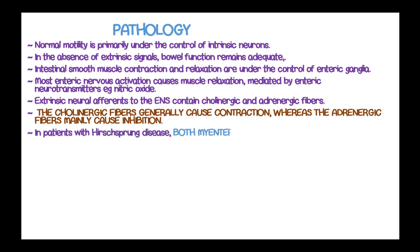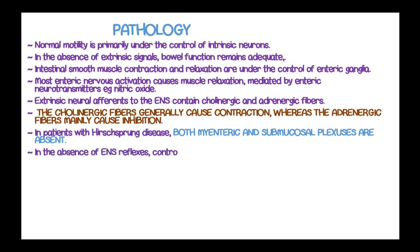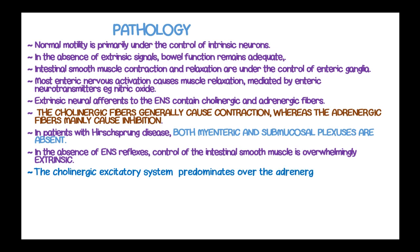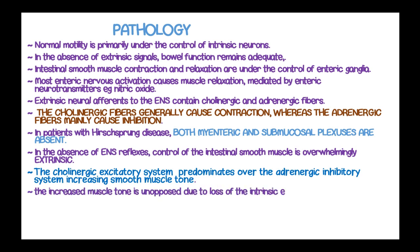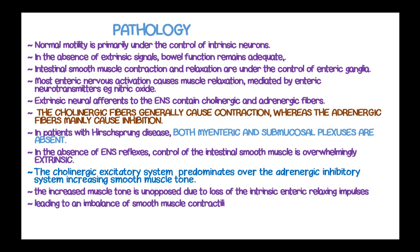In patients with Hirschsprung's disease, both the myenteric and submucosal plexus are absent. Therefore, in the absence of these enteric nervous system reflexes, control of the intestinal smooth muscle is overwhelmingly extrinsic. The cholinergic excitatory system predominates over the adrenergic inhibitory system, increasing smooth muscle tone. The increased muscle tone is unopposed because of the loss of intrinsic enteric relaxing impulses, leading to an imbalance of smooth muscle contractility and uncoordinated peristalsis that causes functional obstruction of the colon.